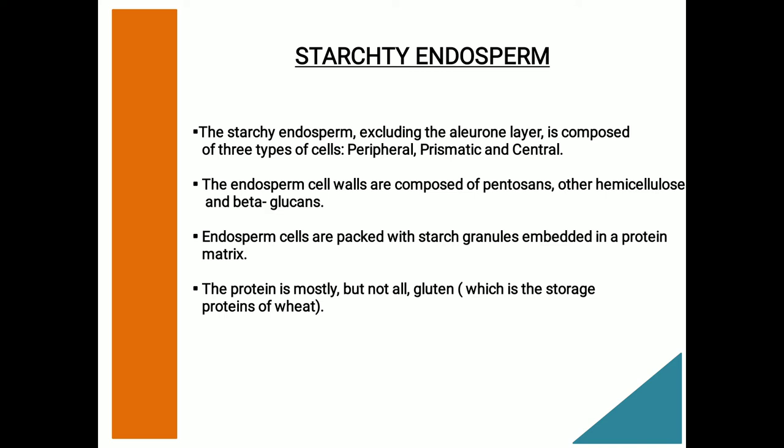The next part of a wheat kernel is the starchy endosperm. This starchy endosperm is made up of three types of cells: peripheral cells, prismatic cells, and central cells. The peripheral cells are the first cells inside the aleurone layer and are usually small. Prismatic cells are elongated, and central cells are more irregular in size and shape. The endosperm cell walls are composed of pentosans, hemicellulose, and beta-glucans. The thickness of the cell walls varies with the location in the kernel — they are thicker near the aleurone.